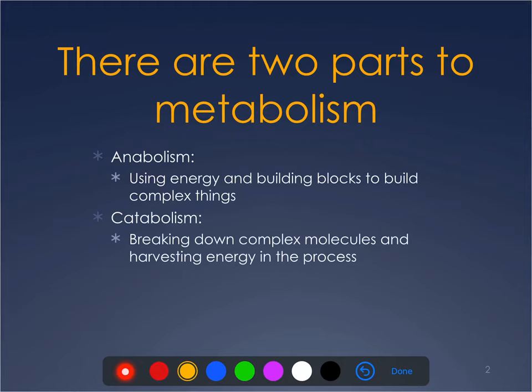There are two parts to metabolism in the biological perspective: anabolism and catabolism. When most people say 'metabolism' — like 'you've got to get your metabolism up' — what they're really talking about is catabolism. Catabolism is basically the rate at which you break down complex molecules and harvest energy: how fast you burn fat, how fast you burn carbs. Anything that involves taking something big, like starch, is catabolism.